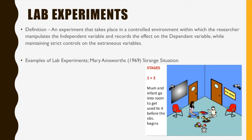First is lab experiments. A definition: a lab experiment is an experiment that takes place in a controlled environment within which the researcher manipulates the independent variable and records the effect on the dependent variable by maintaining strict controls on extraneous variables. An example of this is Mary Ainsworth's 1969 Strange Situation.